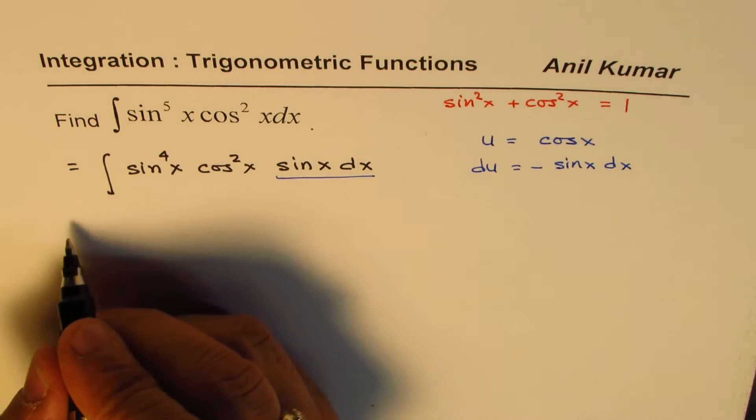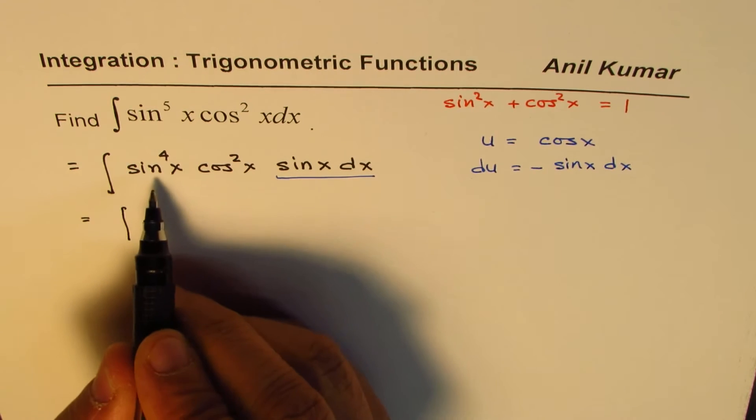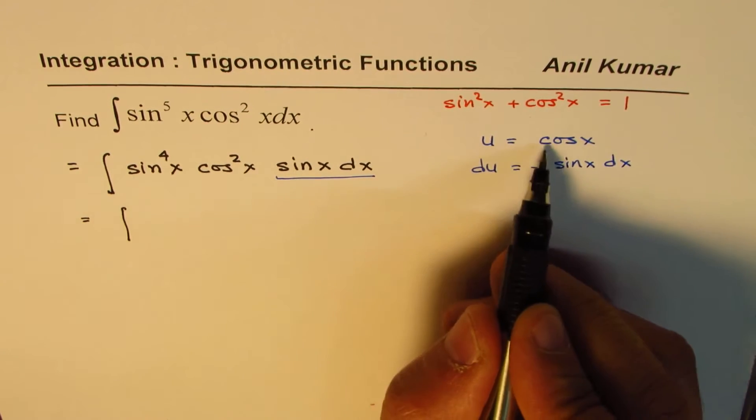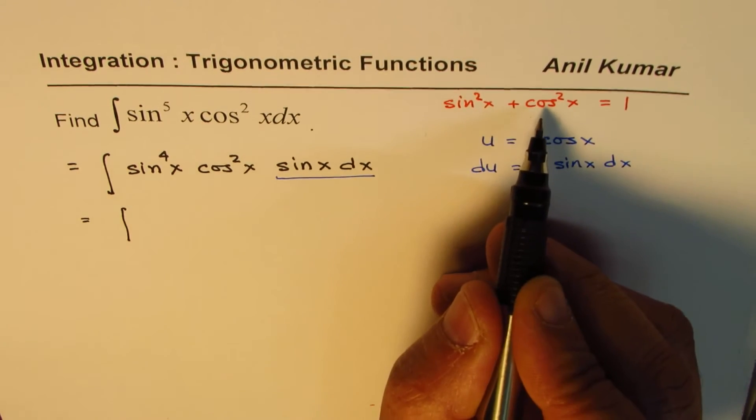And so we could now write this as, now since we are trying to substitute u as cos x, we'll change sine into cos.